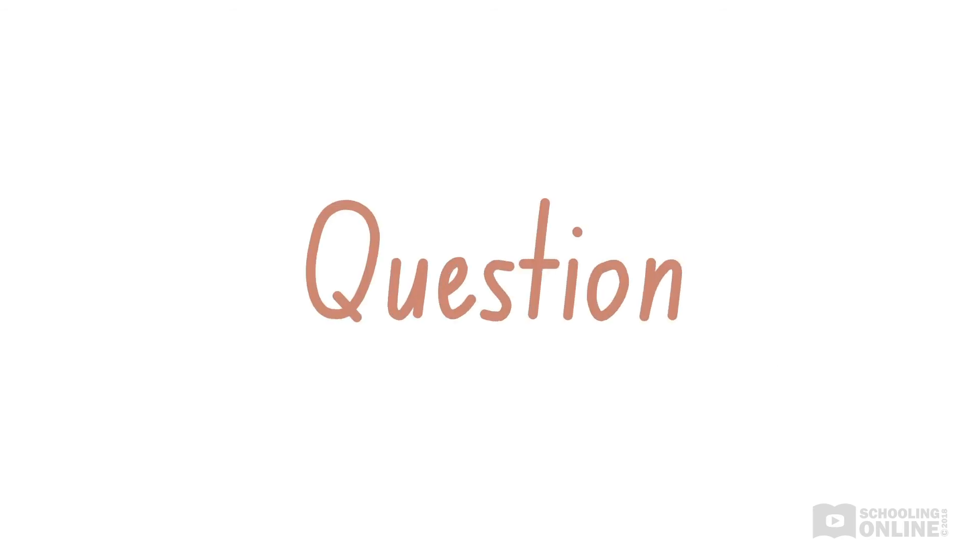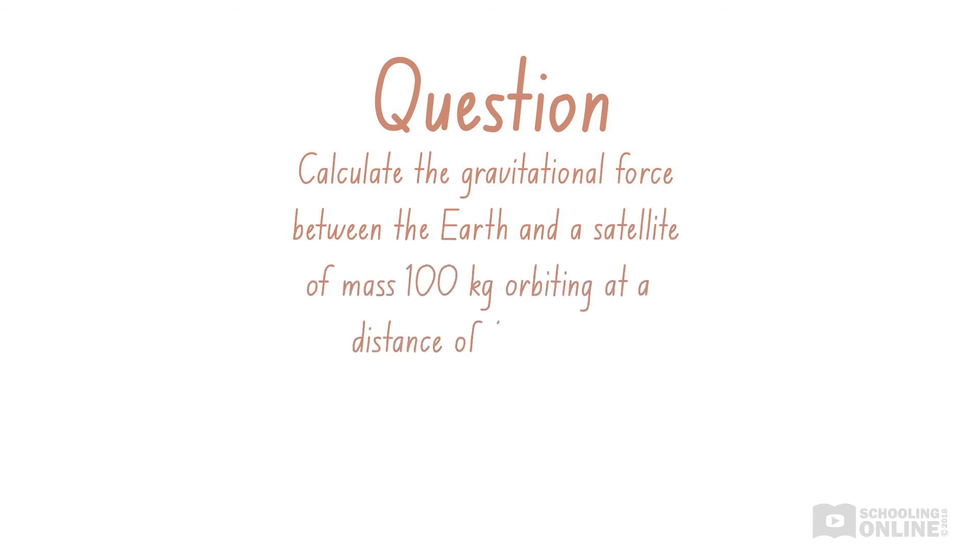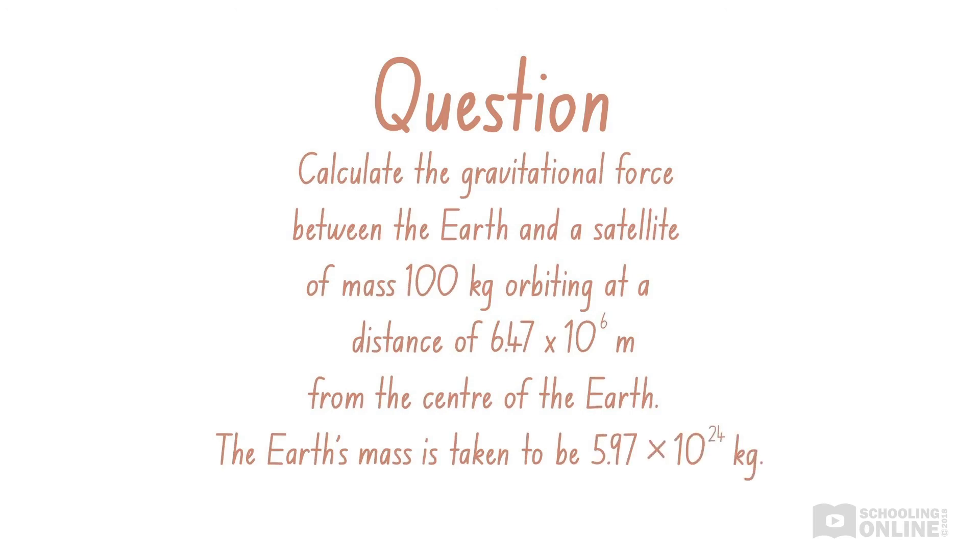Now let's look at a sample question. Calculate the gravitational force between the Earth and a satellite of mass 100 kg, orbiting at a distance of 6.47 x 10^6 metres from the centre of the Earth. The Earth's mass is taken to be 5.97 x 10^24 kg.